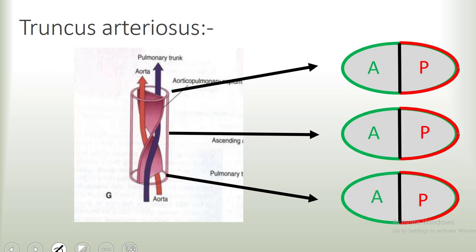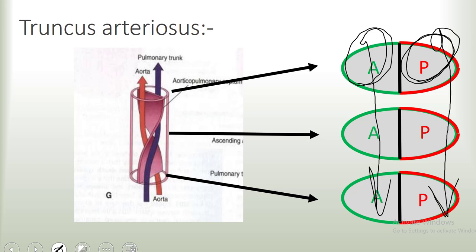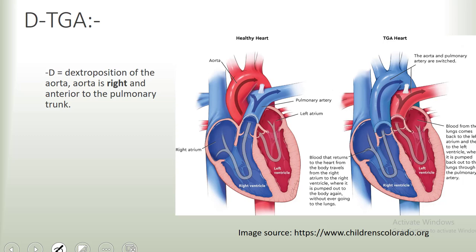In transposition of the great arteries, there is failure of that aorticopulmonary septum to spiral around itself. Because of that, the aorta on top will be on the right side, but then it will continue to be on the right side until it connects with the right ventricle. Same thing for the pulmonary trunk—because it doesn't twist, it will remain on the left side and continue on the left until it gets connected to the left ventricle. The D in D-TGA actually stands for dextral position of the aorta, because normally the aorta is located to the left of the pulmonary trunk. In D-TGA, the aorta will be located to the right of the pulmonary trunk.